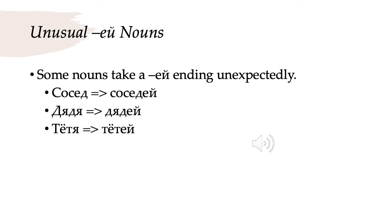Next we have some unusual -ей nouns — nouns that take -ей in the genitive plural when you wouldn't expect them to. Сосед, neighbor, is hard stem in the singular but soft stem in the plural and takes a -ей ending in the genitive, so соседей. Дядя, uncle, becomes дядей. And тётя, aunt, becomes тётей. You will see occasionally the endings дядей and тётей, which is what you would expect, and people do sometimes use that, but the correct endings for дядя and тётя are generally considered to be дядей and тётей in the genitive plural.